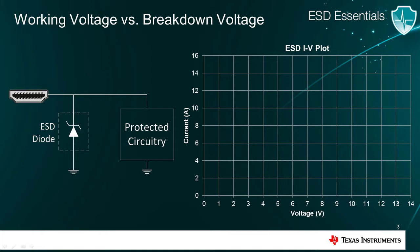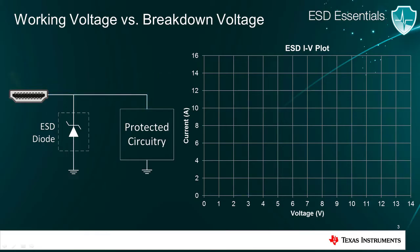The graph on the right-hand side shows the current voltage response of the diode. When the interface signal is passing through the system, the ESD diode is effectively invisible and no current passes through it. However, when an ESD strike occurs, the voltage across the diode exceeds a certain threshold known as the breakdown voltage, and the diode begins to conduct and shunt current to ground.